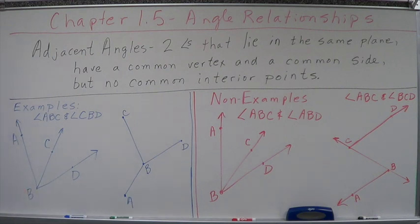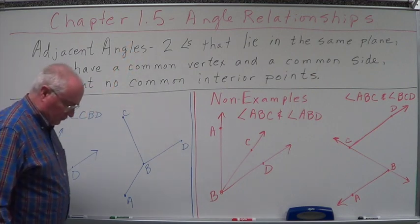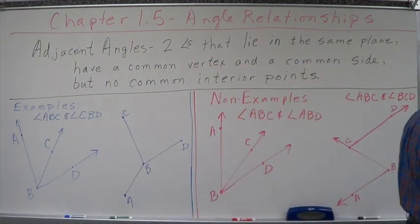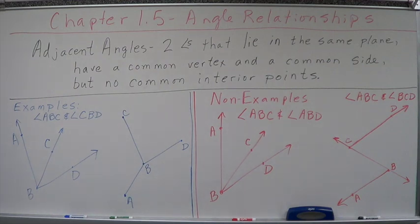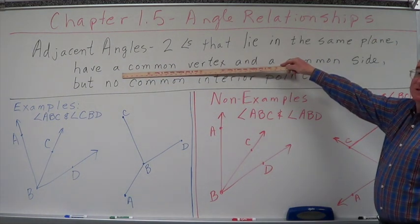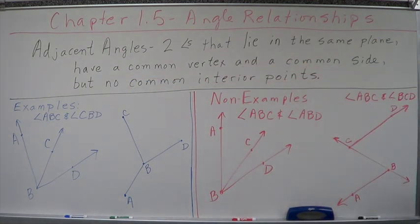We're also going to be referring to some things that you already are supposed to know, so let's dig into it. The first thing I want to talk about is adjacent angles. Let's talk about what their formal definition is, and then let's go into some examples and non-examples. Adjacent angles. Two angles that lie in the same plane. They have to be in the same plane. They can't be in different planes. They have a common vertex, a common center point, and a common side.